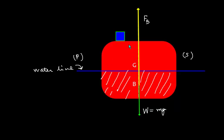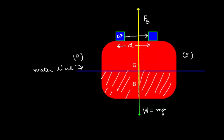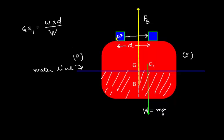Now if I shift a small weight w in the transverse direction by a horizontal distance d, the center of gravity will also shift proportionally to a new position G1. The shift in center of gravity is given by the formula: GG1 = (w × d) / W, where w is the small weight shifted, d is the horizontal distance, and W is the displacement of the ship.